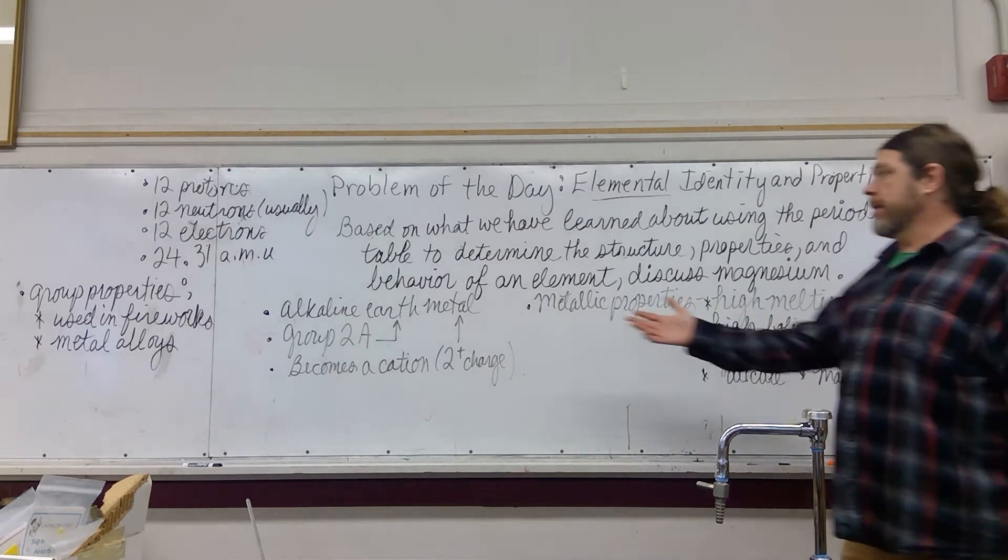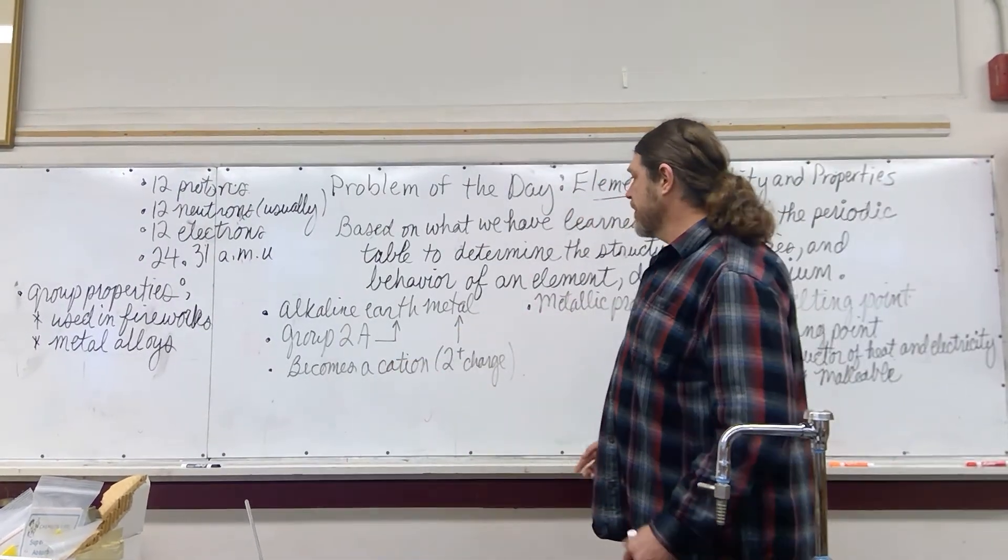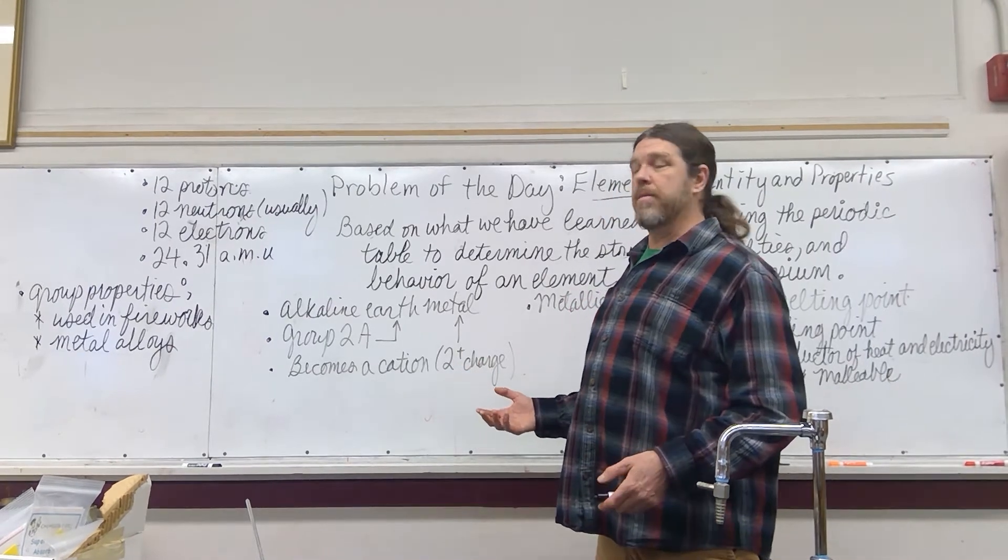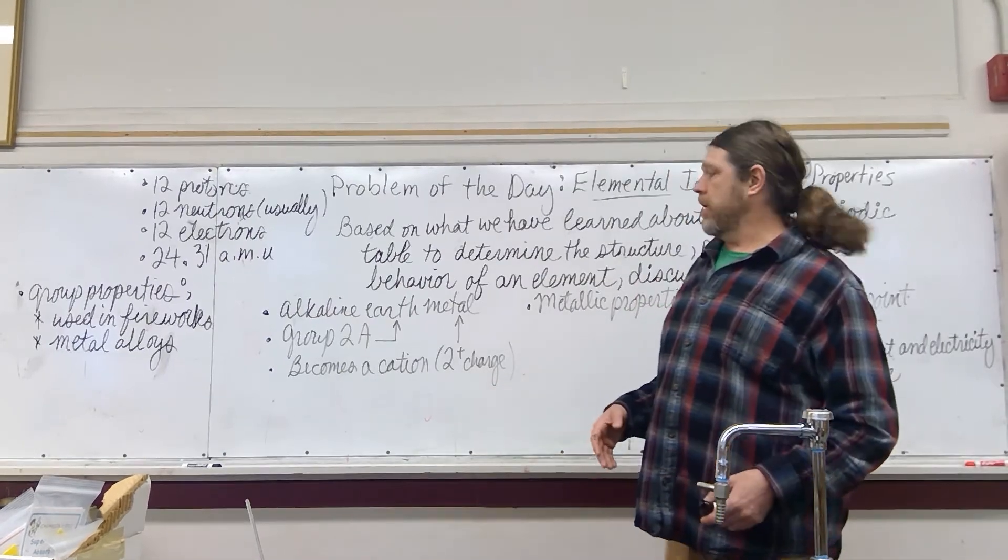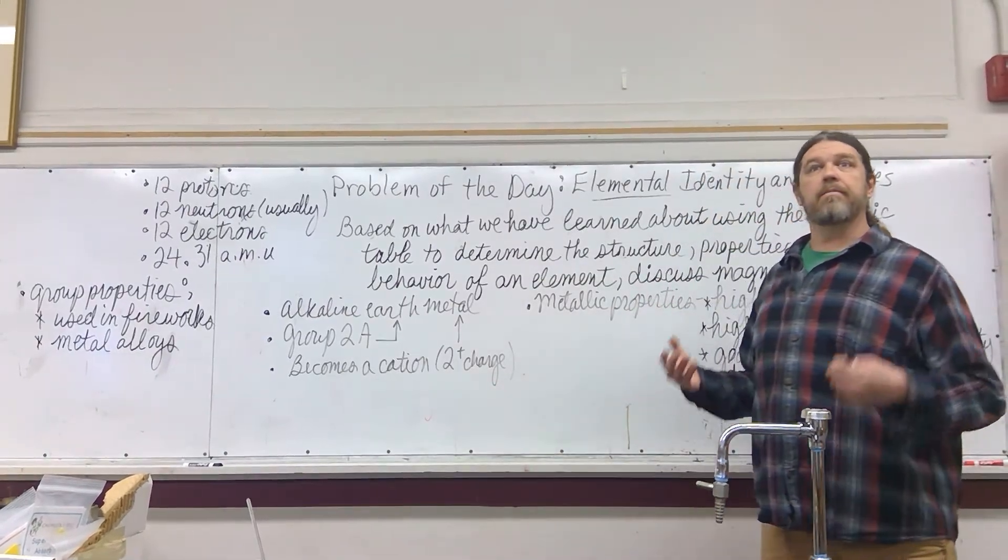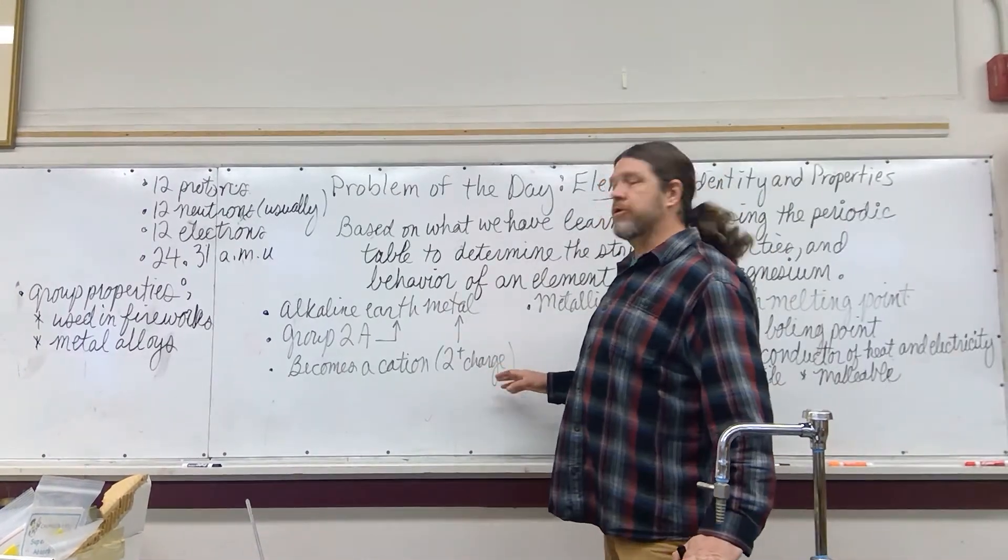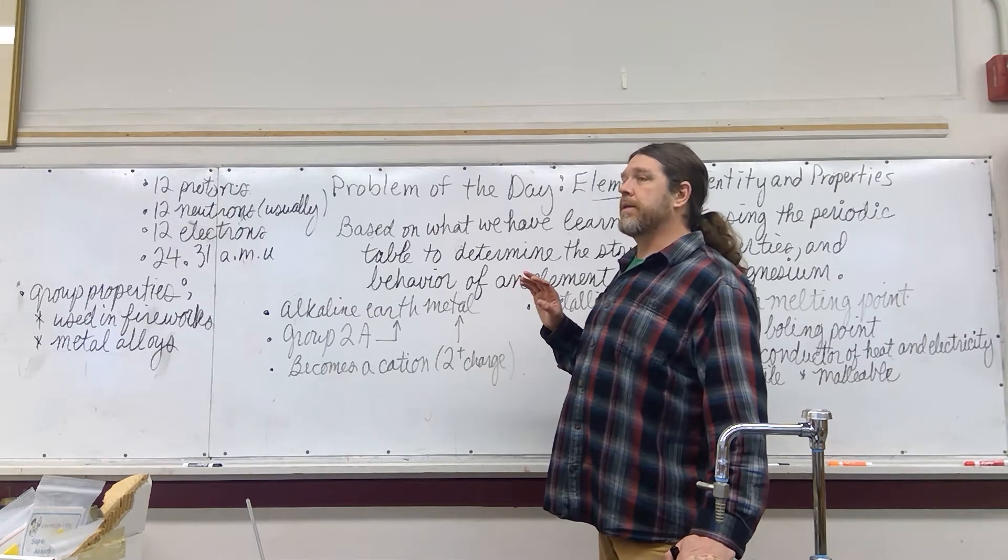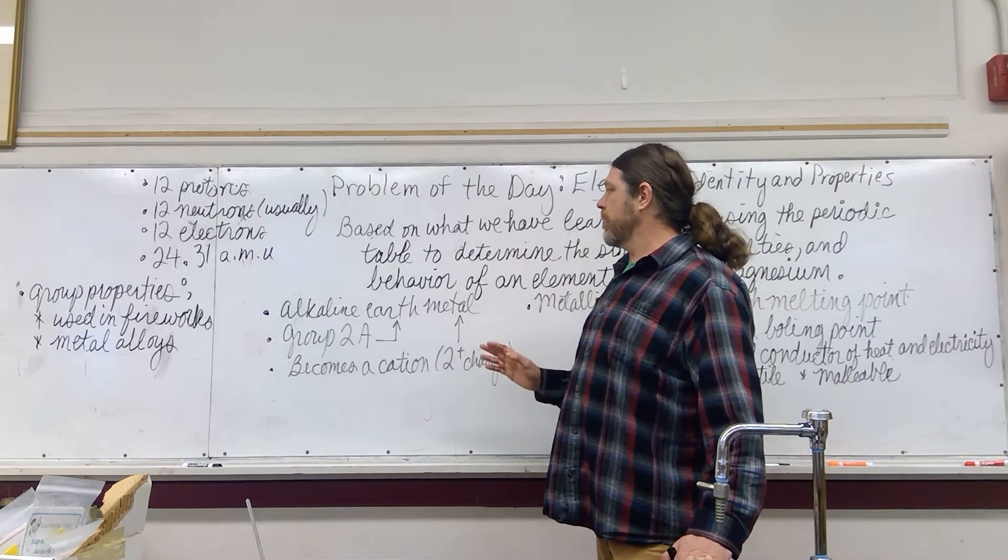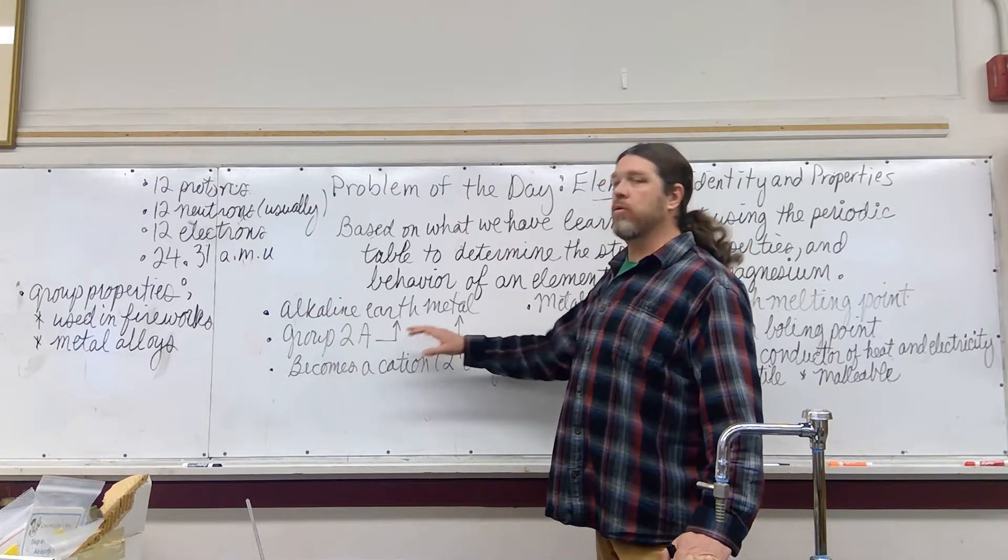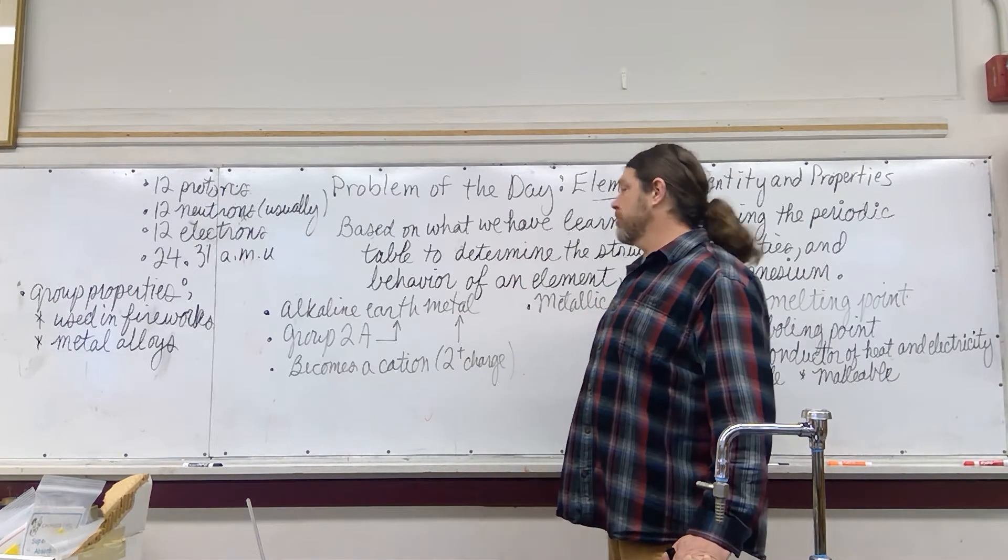So, it's an alkaline earth metal, which is group 2A on the periodic table. And one of the characteristics all alkaline earth metals have is they take on always a positive 2 charge when they become a cation. They become a positive ion. Now, there are many transition metals that will sometimes take a positive 2 charge, but the reason why magnesium and barium and calcium are all in group 2A is that they only take that charge. They will not take another charge. They are not transitional, so to speak.